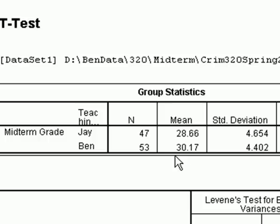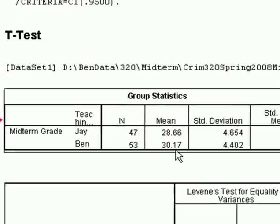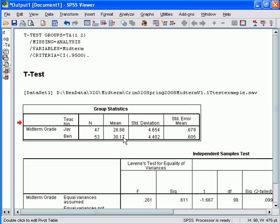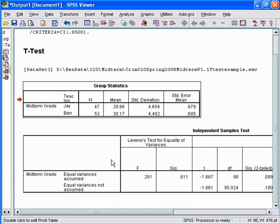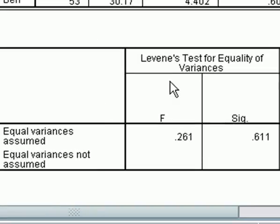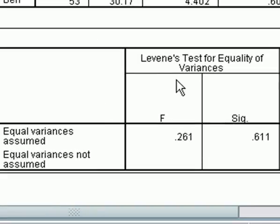The question really becomes: is the slight lead that I have over Jay statistically significant? Before interpreting our independent samples test, the first thing you always have to do is look at Levene's test for equality of variances. This is a sub-hypothesis within your broader hypothesis test. The Levene's test tests the null hypothesis that the variances are equal on your grouping variable — specifically, that the variance for Jay students and the variance for Ben students on the dependent variable, score on the midterm, are equal.